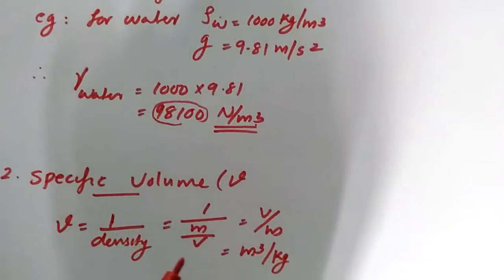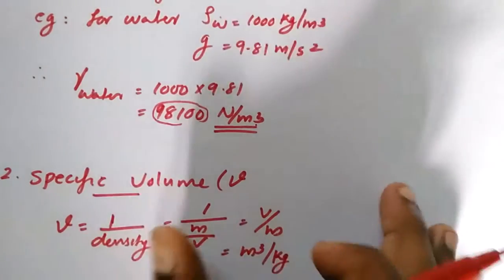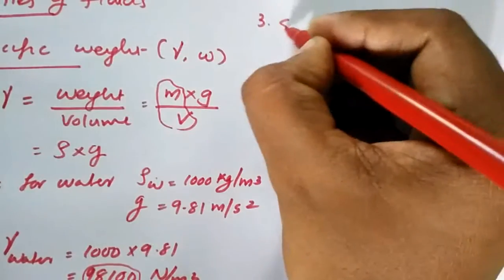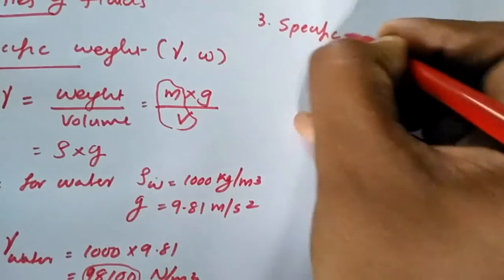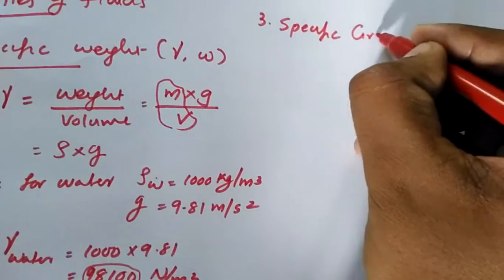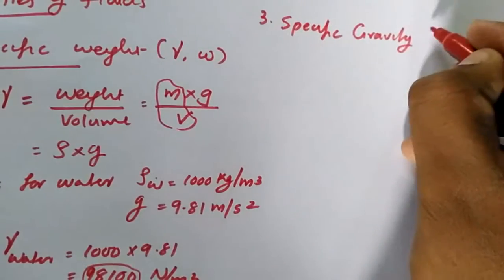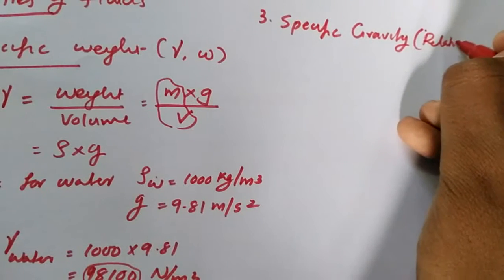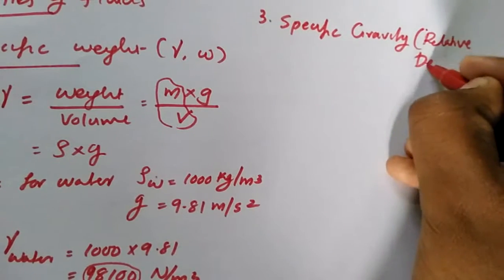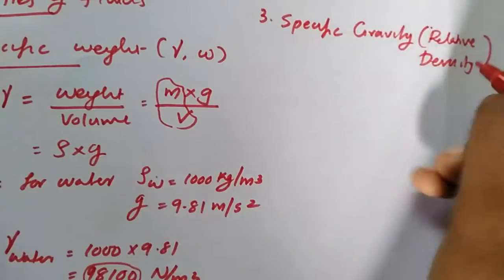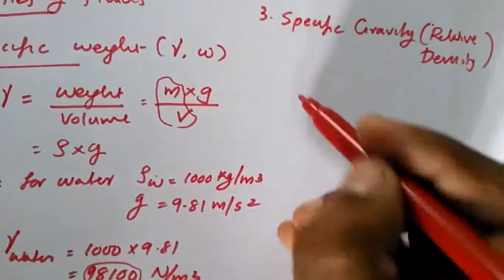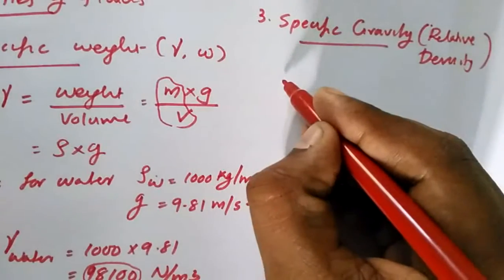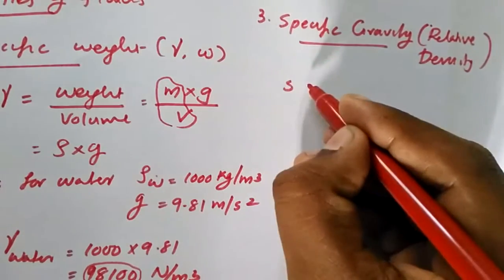The next property that we are going to discuss, the third property, is specific gravity or we can call it as relative density. We will denote it by small s.